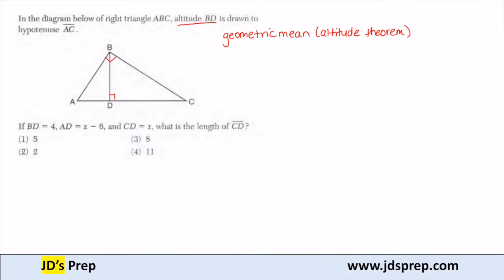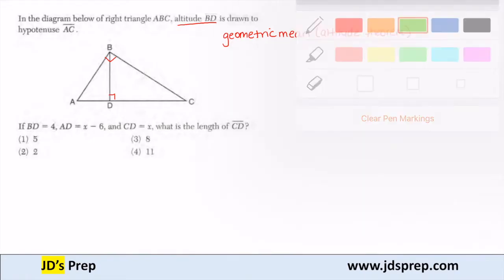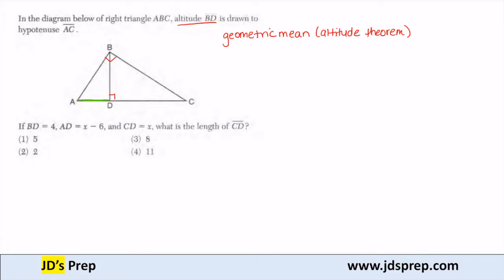What the altitude theorem says in this example is that side AD, which is here, over our altitude BD, is equal to our altitude BD over the other segment formed, DC.